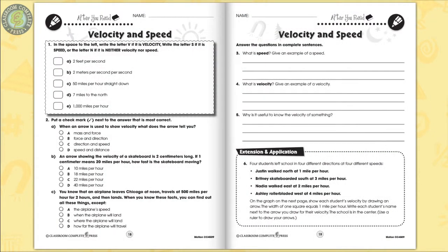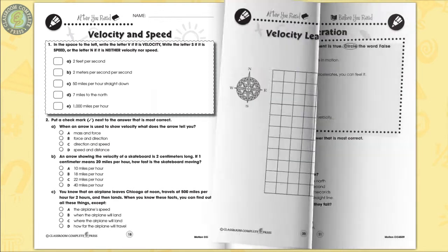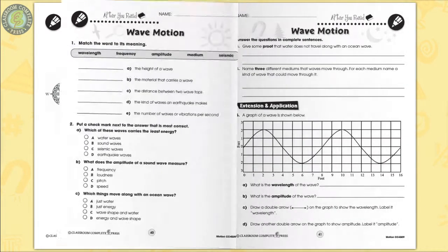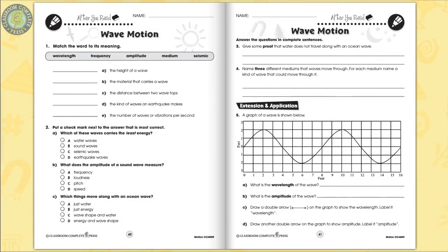The After You Read sections include short and long questions for comprehension, followed by an extension activity. Graph the velocity of students walking home from school at different speeds. Identify the wavelength and amplitude on a wave.